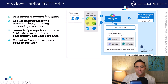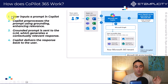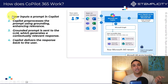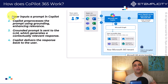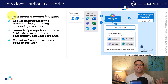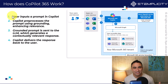What you do first — which is going to be number one here — is the user is going to input a prompt in Copilot. You're going to say something like: write an action plan, or write a report summarizing the weekly progress for my team — something like that.